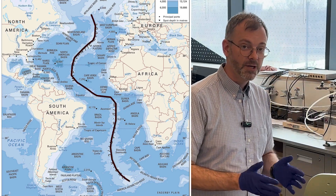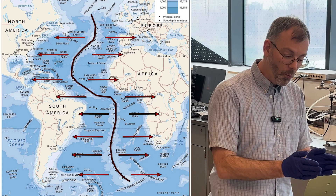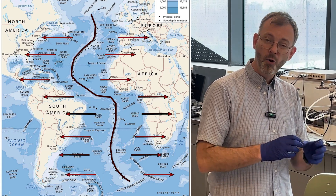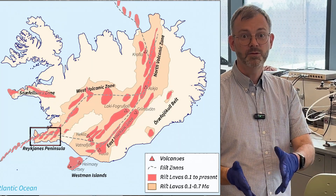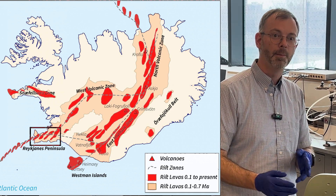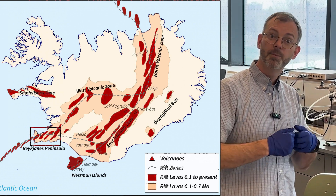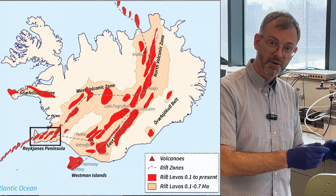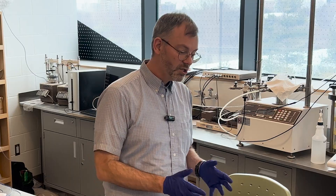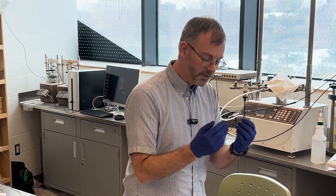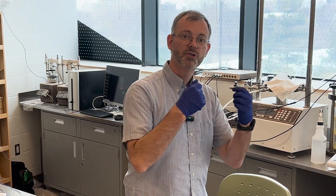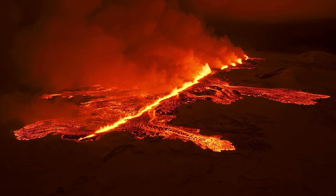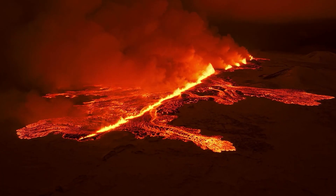The mid-Atlantic ridge has been opening on a regular basis — it opens in segments. In Iceland we see a segment opening up, and it's not completely opening right across the peninsula, but in different locations. Each time it opens, we see fractures, we see lava flowing out and making new rocks on the surface.